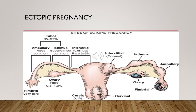This slide shows the sites of ectopic pregnancy. The most common is tubal, and the most common part of the tube is the ampullary, followed by the isthmus, followed by the interstitial. Other sites include ovarian ectopic pregnancy, cervical ectopic pregnancy, cesarean scar ectopic pregnancy, and abdominal ectopic pregnancy.